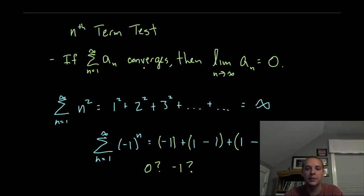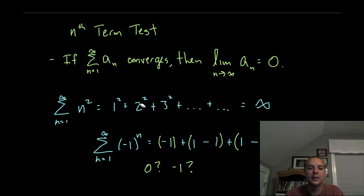If a series converges, the terms definitively have to go to zero. Looking at the first example, this is going to add up to a finite number, so you have to have the later terms become negligible so that they don't affect what that sum is.